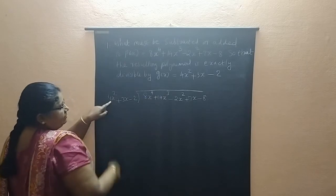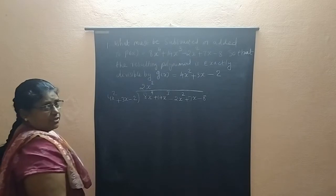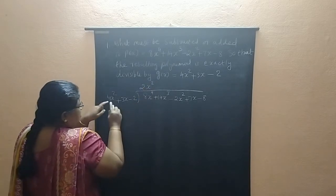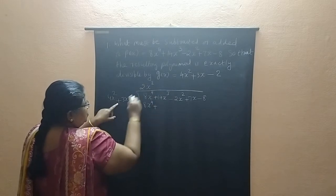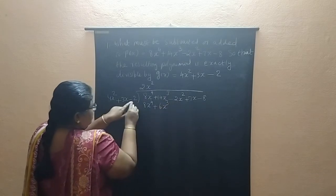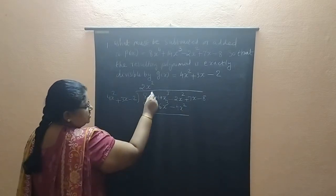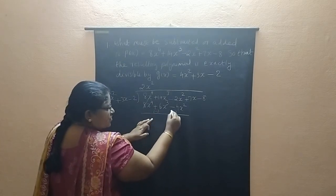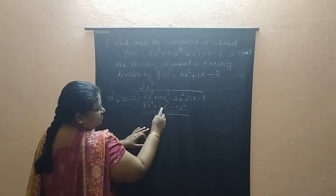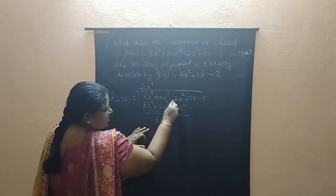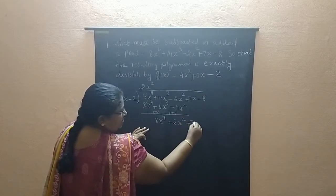8X to the power 4 divided by 4X square is 2X square. 2X square into 4X square plus 3X minus 2 gives 8X to the power 4 plus 6X cube minus 4X square. Now we are going to subtract. This we can cancel. Change the sign. Plus become minus, minus become plus. 14 minus 6 is 8X cube. This is minus 2, this is positive 4, and then it becomes positive 2X square. Next term we can take down.